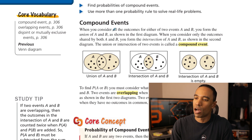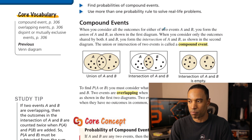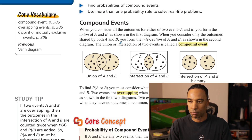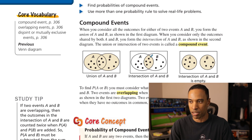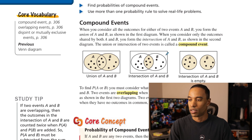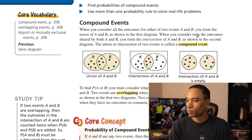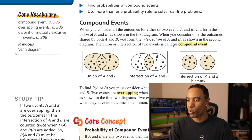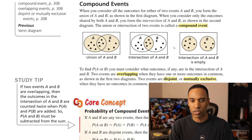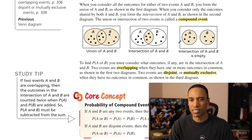Let's explore compound events as a whole. When you consider all the outcomes for either of two events A and B, you form the union of A and B, as shown in the first diagram — everything of A or everything of B or everything in between, which kind of counts them doubly. When you consider only the outcomes shared by both A and B, you form the intersection of A and B, as shown in the second diagram. Union — think of the word 'or.' Intersection — think of the word 'and.' The union or intersection of two events is called a compound event.